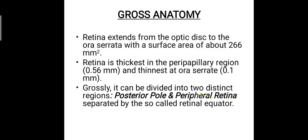The gross anatomy of the retina: its extent is from the optic disc to the ora serrata, with a surface area of about 266 square millimeters. The retina is thickest in the peripapillary region and thinnest at the ora serrata. We will explain what the ora serrata is in the following slides.